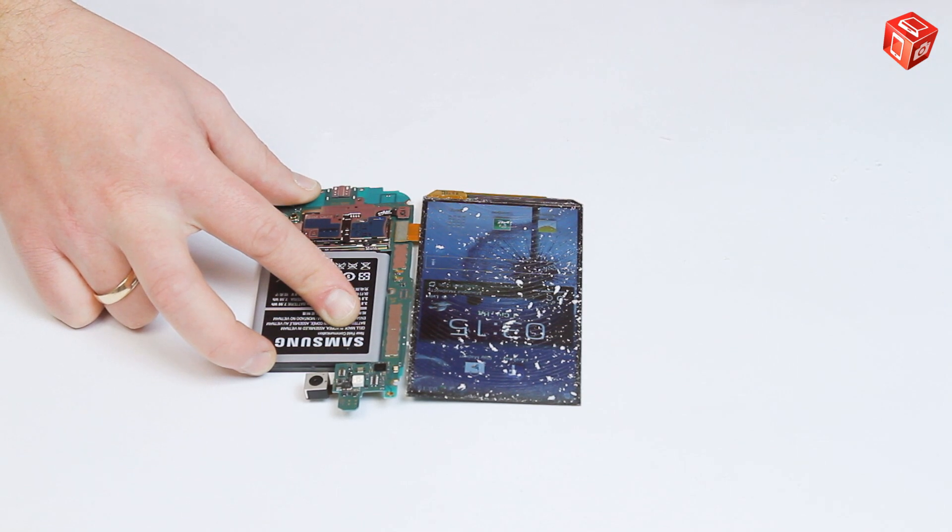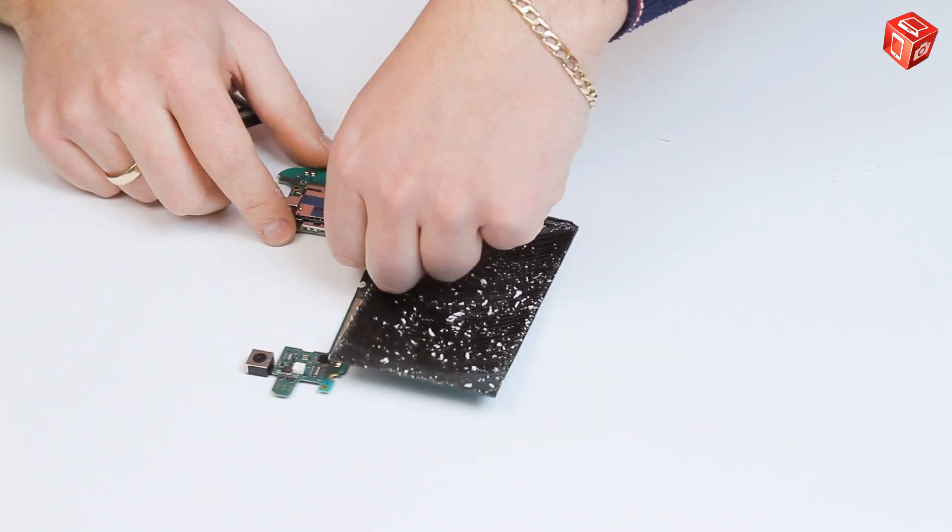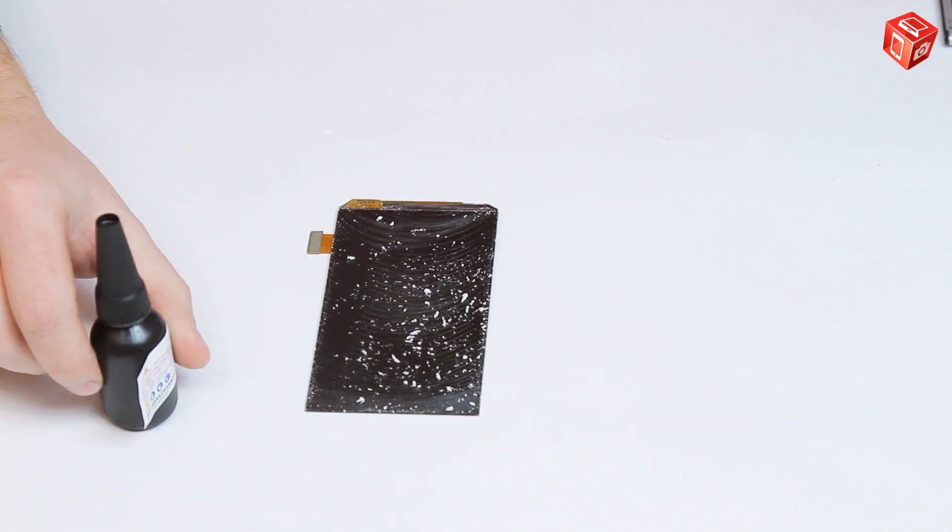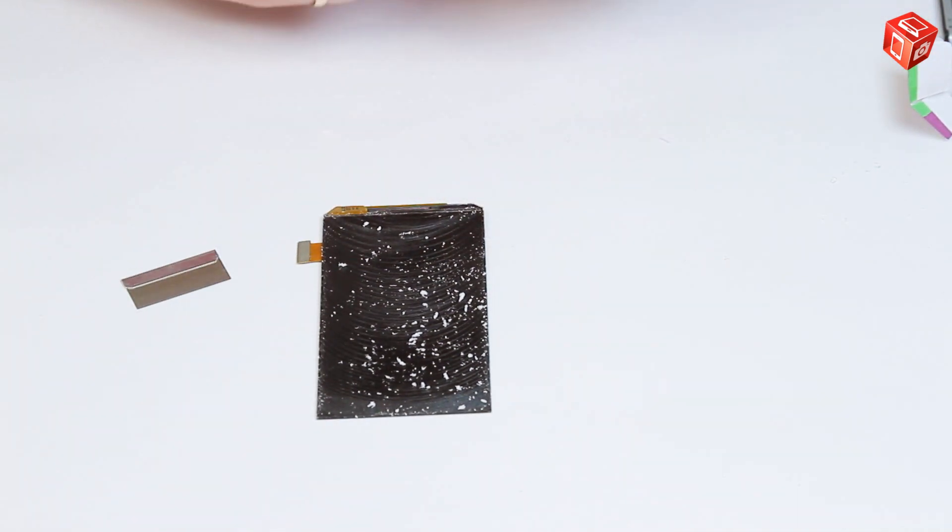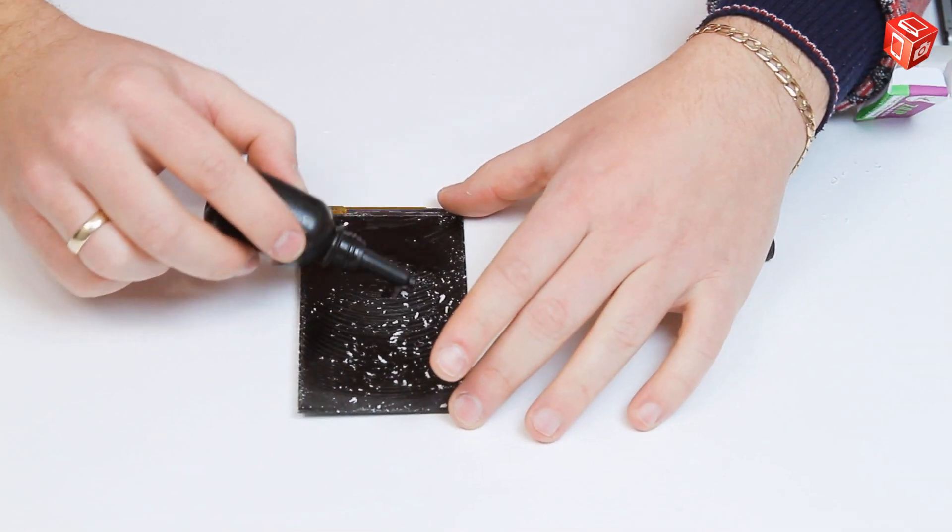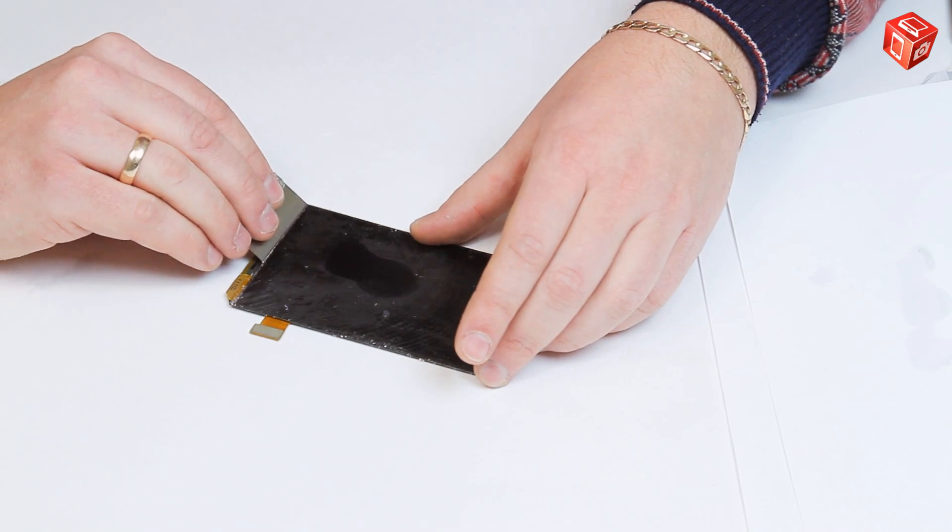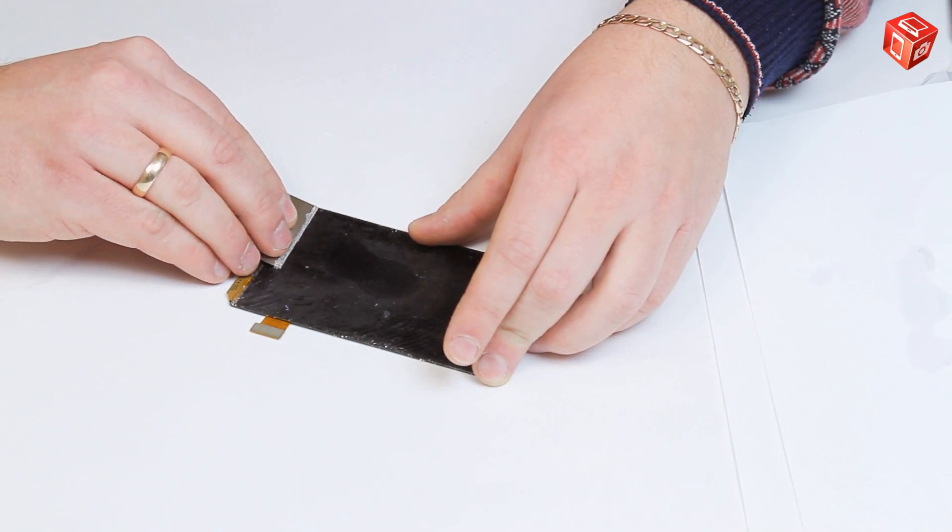There will be glue remains on the module sensor. Disconnect the module from the mainboard. Take the glue remover and deposit it on the display module. Take off the glue remains using the glue removing blade. Be careful not to damage the polarization film.